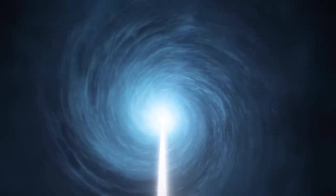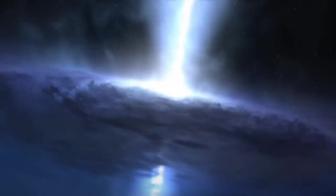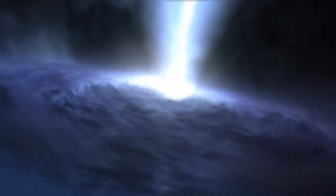Messier 106 has a supermassive black hole at its center. Although this is true for most galaxies, this black hole is particularly active and hungry, gobbling up nearby material at a startling rate.